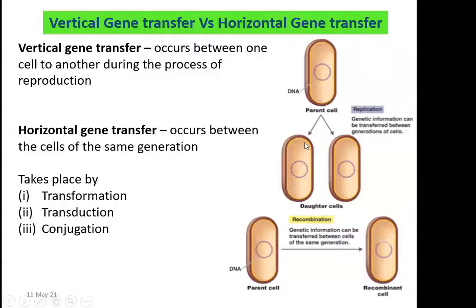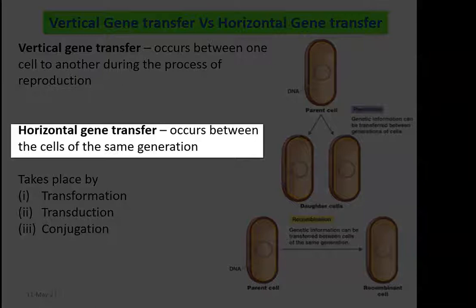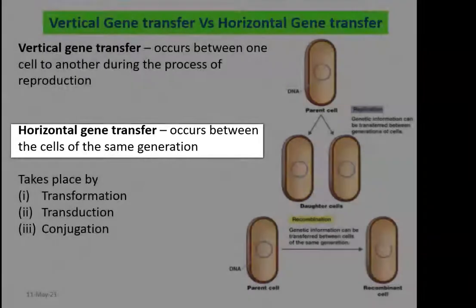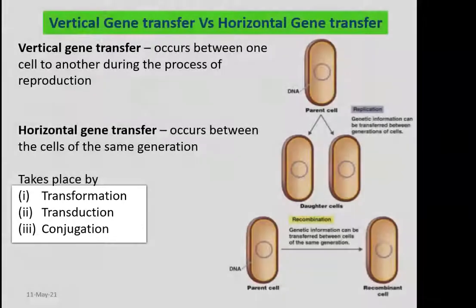The next phenomenon is horizontal gene transfer. Horizontal gene transfer has shaped a lot of characteristic features or phenotypic traits in bacteria. This kind of gene transfer usually occurs between cells living in the same generation. The three important horizontal gene transfer events that take place in nature include transformation, transduction, and conjugation.